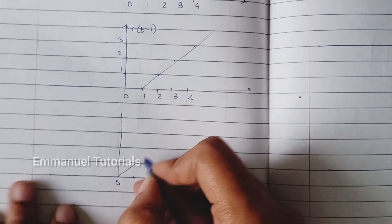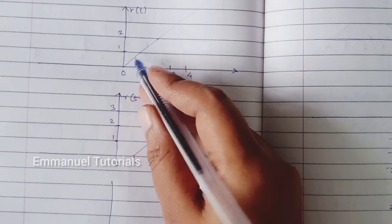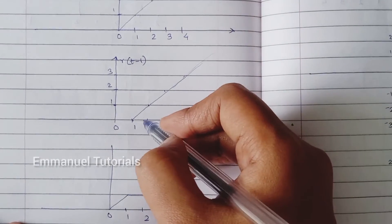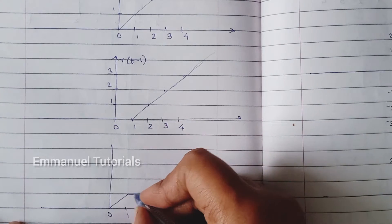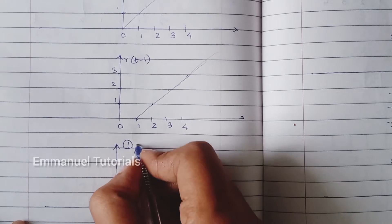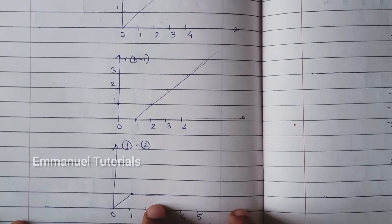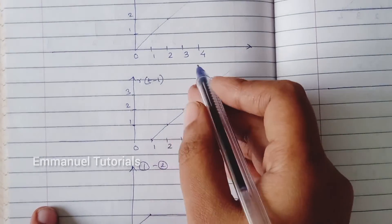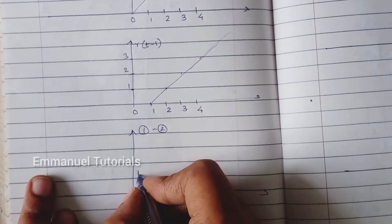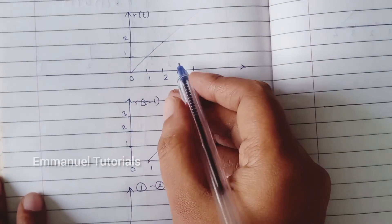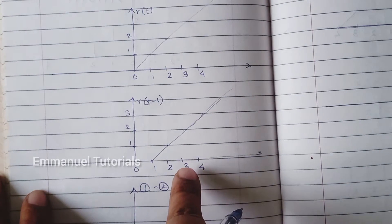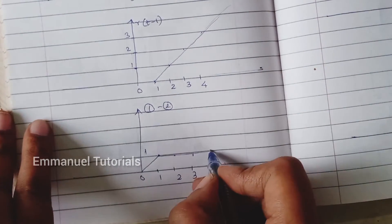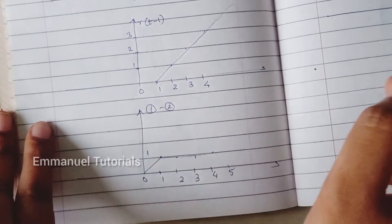So the resultant signal from 0 to 1 has the same shape as the first signal. At t equal to 1, the first signal's amplitude is 1 and the second is 0, so 1 minus 0 is 1. At t equal to 2, first signal is 2, second is 1, so 2 minus 1 is 1. At t equal to 3, it is 3 minus 2 equals 1, and at t equal to 4 it is 4 minus 3 equals 1, and so on. This continues to infinity because both signals continue to infinity.